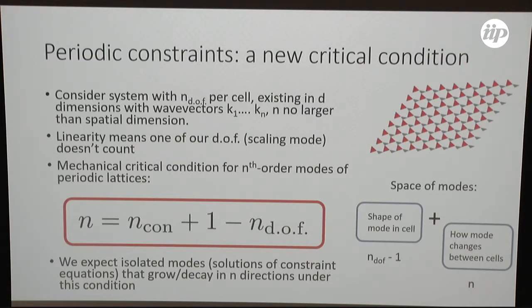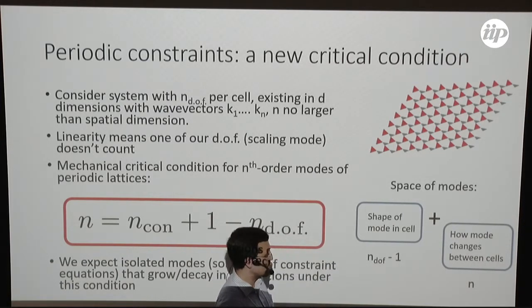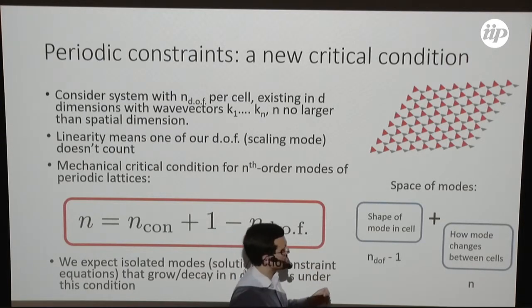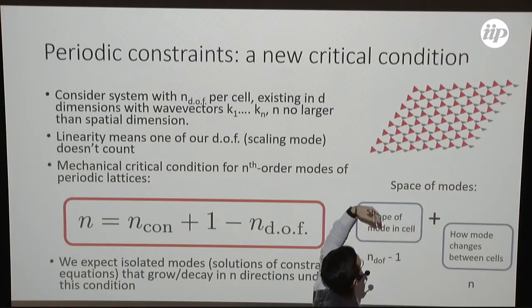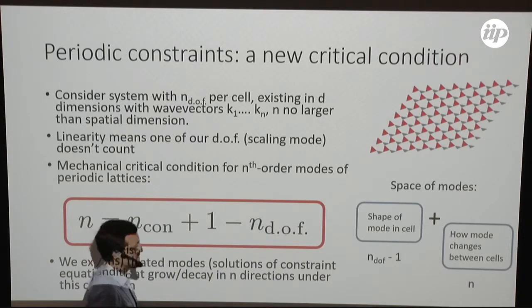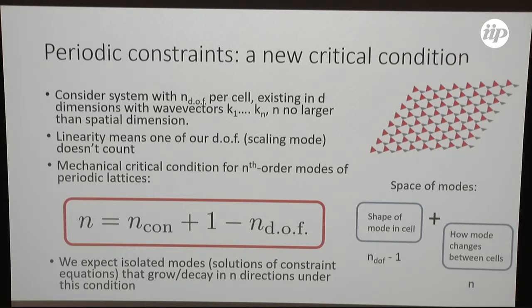This is where the new work comes in, the one that is just on the archive now. This is work that really takes advantage of the fact that we have a periodic structure. So I'm going to make a new counting argument. My new counting argument is what space of modes do I have? The space of modes I have is the number of degrees of freedom I have in the cell. And then I'm going to subtract one off because this is a linear theory, so I don't care if I just doubled the size of the mode. That doesn't count as a new mode. But then I'm also going to say, well, my modes are changing as I move in n directions. So in two dimensions, I can move in up to two directions. And I can say, maybe I'm doubling as I move in that direction. Maybe I'm halving as I move in that direction. So my space of modes is actually not just the number of degrees of freedom in the cell. I also need to count the dimensions I have to play with as a space of modes. So if I want to say, what is the size of my space of modes? How many constraints do I need to get to the point where I'd expect to have isolated zeros? I actually have this number, which is different. So this is what I call nth order Maxwell criticality.